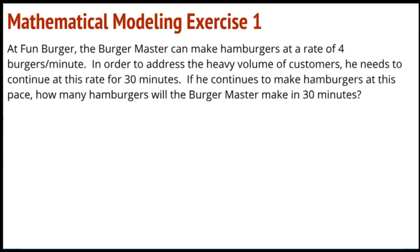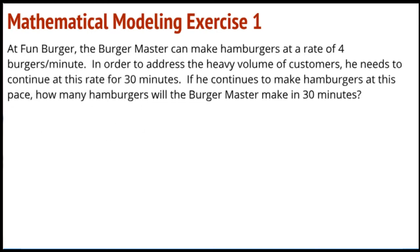At Fun Burger, the burger master can make hamburgers at a rate of four burgers per minute. In order to address the heavy volume of customers — there are lots of people coming in — he needs to continue at this rate for 30 minutes. He needs to continue at a constant rate; he can't slow down, can't speed up, keep it steady. If he continues at this pace, how many hamburgers will the burger master make in 30 minutes?